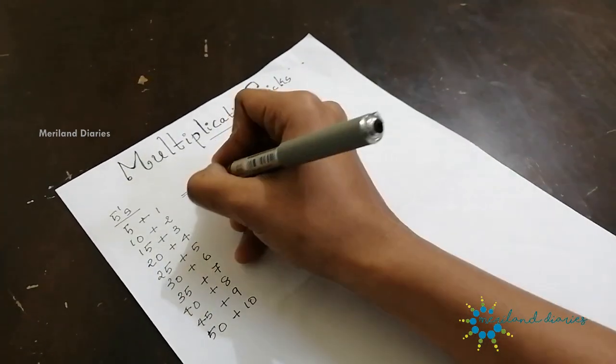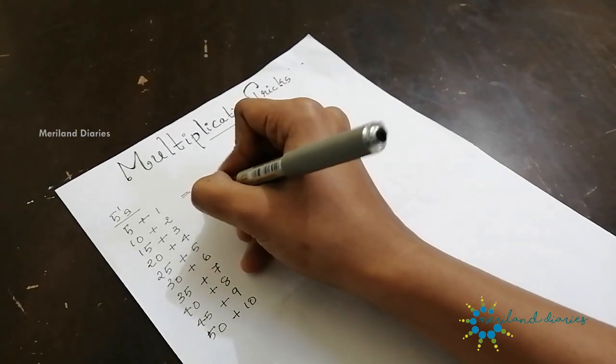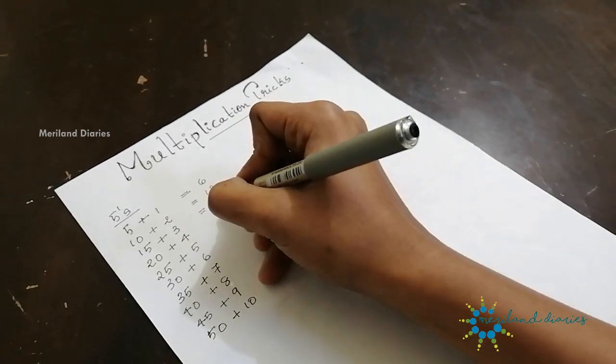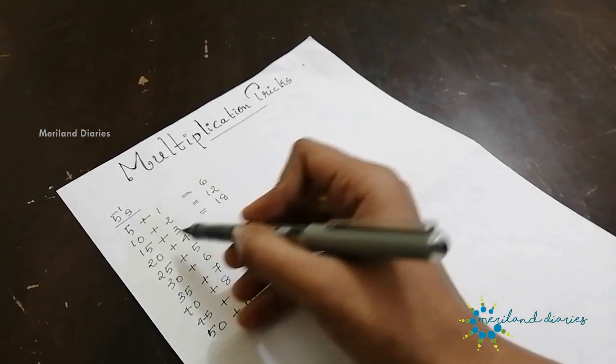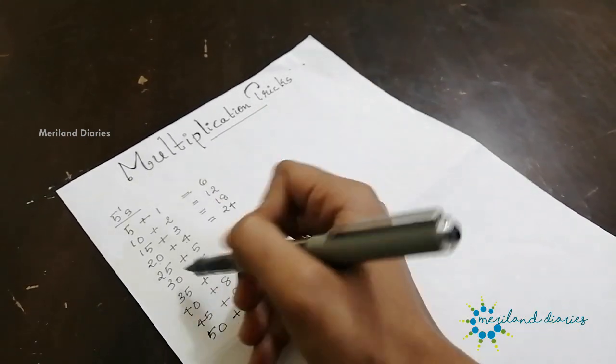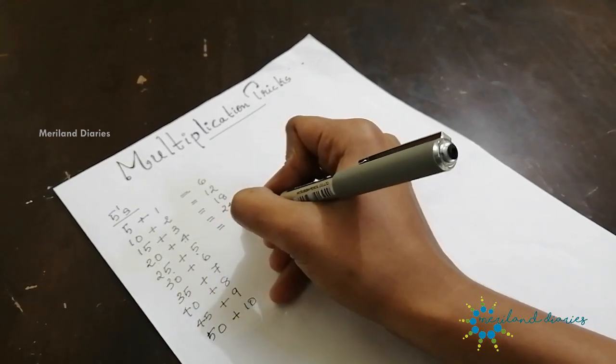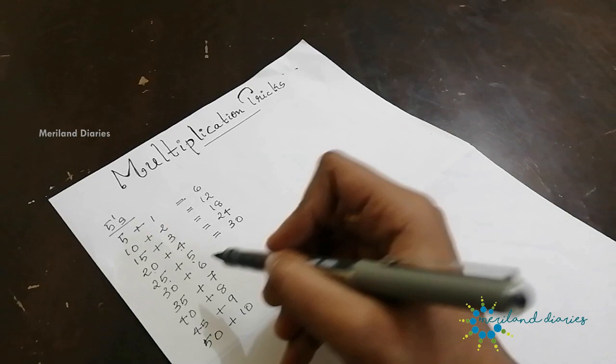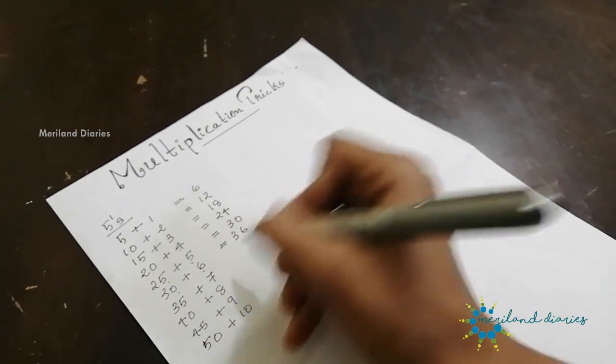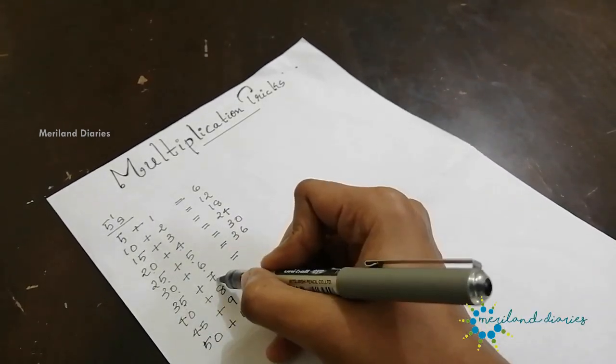So 5 plus 1 equals 6, then 10 plus 2 equals 12, then 15 plus 3 equals 18, then 20 plus 4 equals 24.